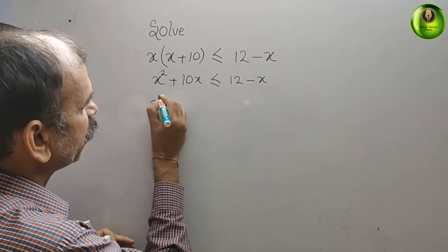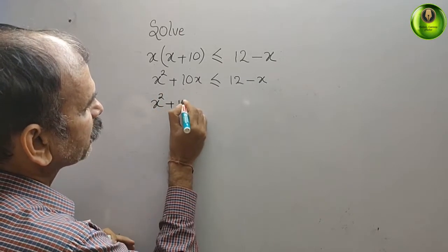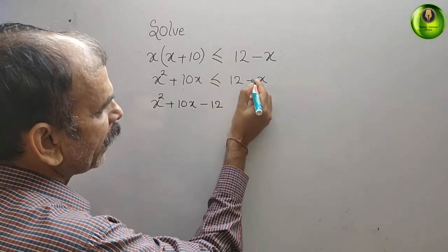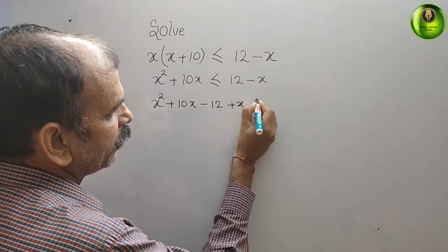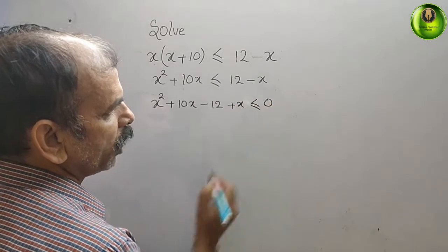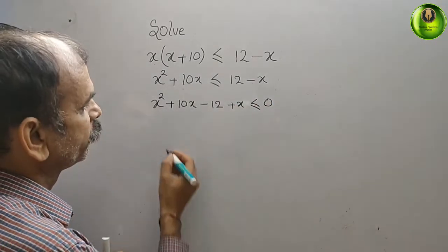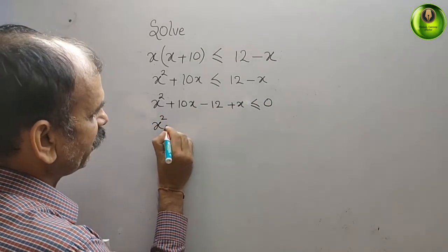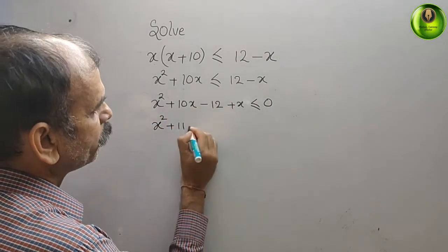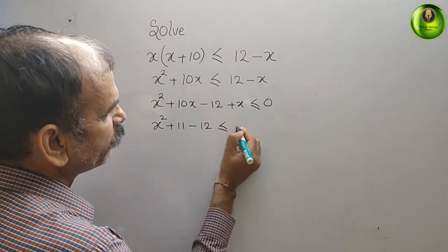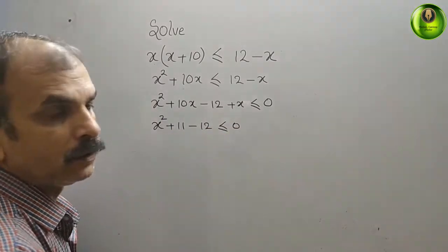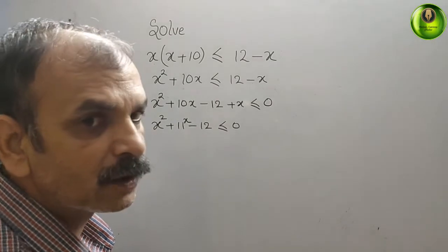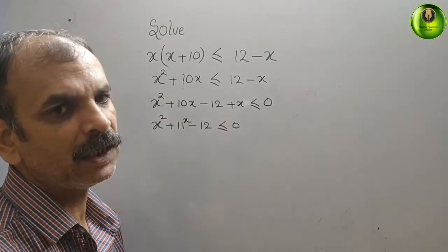Now bring everything to the left side. You get x² + 10x, then 12 becomes minus 12, and minus x becomes plus x, giving x² + 11x minus 12 less than equal to 0.